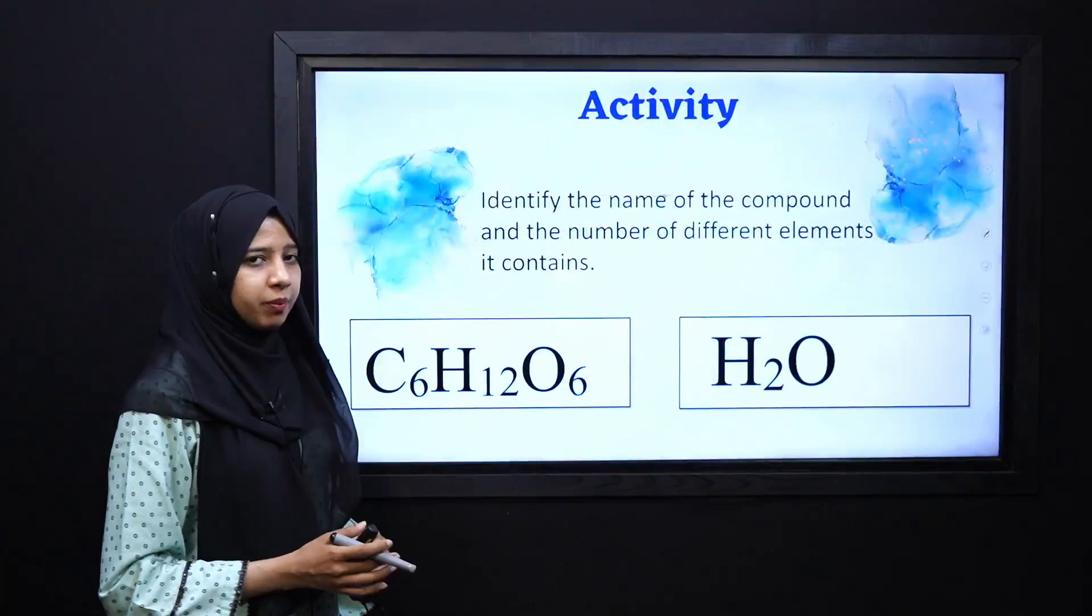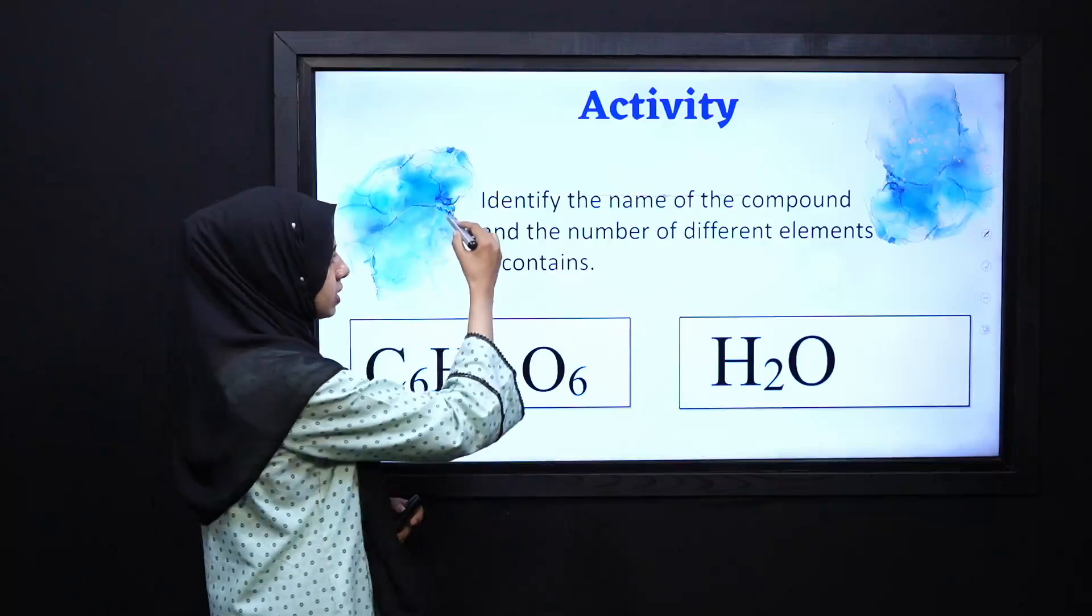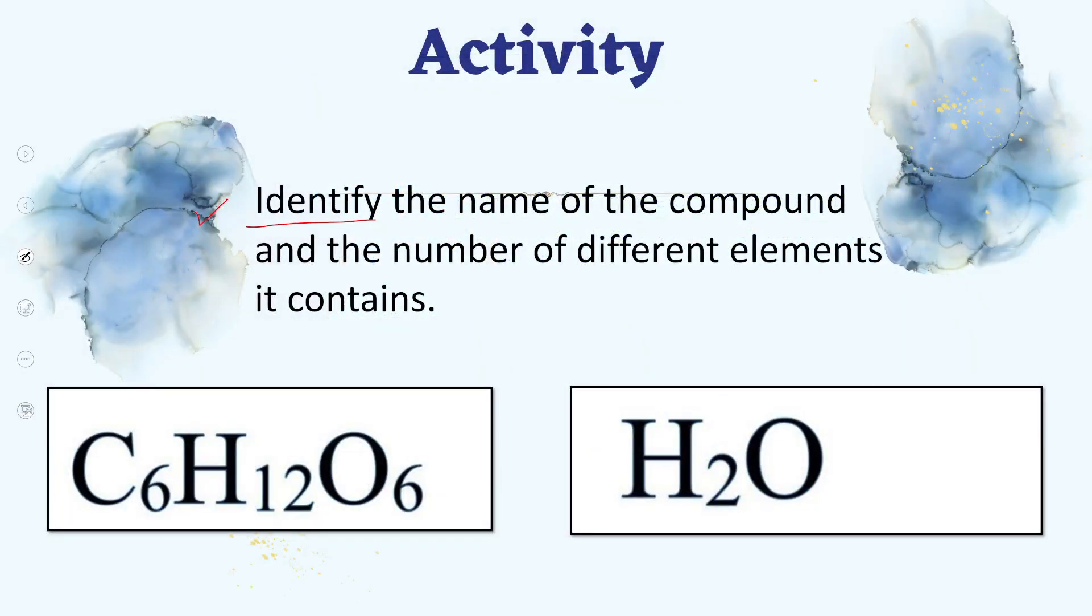Mazeed, hum apne isi knowledge ko apply karte hui, ek activity ko perform karenge. Toh mujhe bataaiye, ke aap in dono compound ko, in dono mein se compound ko identify kijiye, aur mujhe bataaiye, ke humare paas kitne number of elements hain, in dono given pictures ke andar.